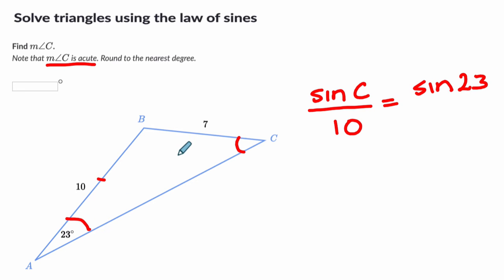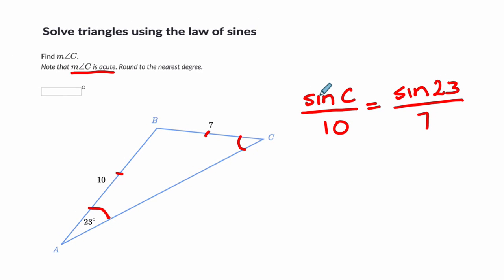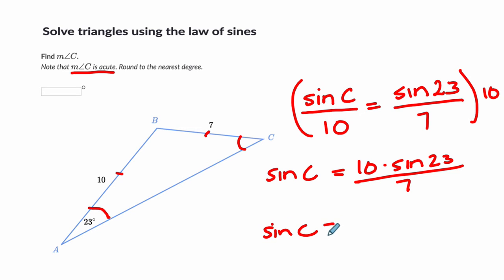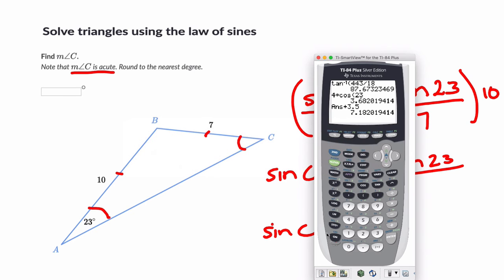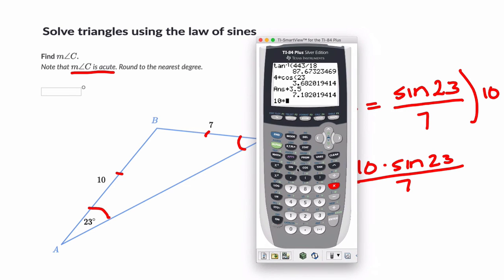I guess you can call that angle A or whatever, because it's at point A, over side length A here. Now I chose to write the sines on top because I like to keep my variable up top, but you could have written it with the sine of C in the denominator and you would still get the same thing. Now to solve this, I'm just going to multiply both sides by 10. So the sine of angle C equals 10 times the sine of 23 divided by 7. So the sine of C is going to be 10 times the sine of 23 divided by 7.